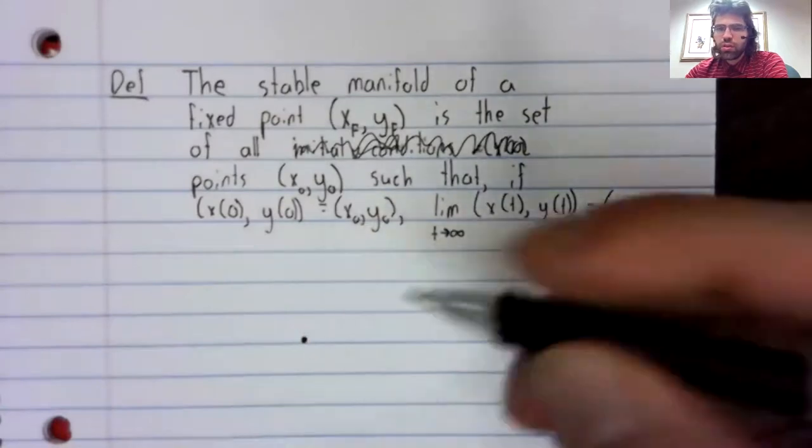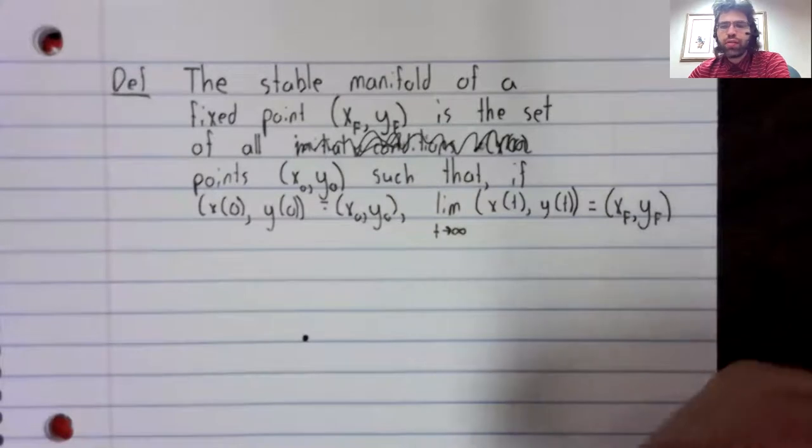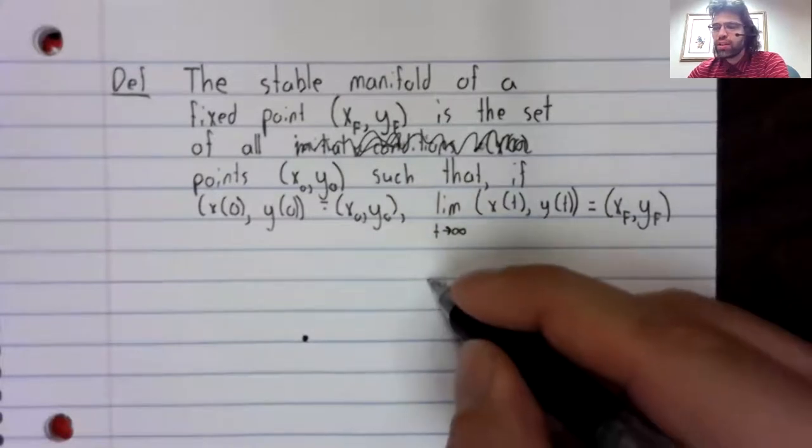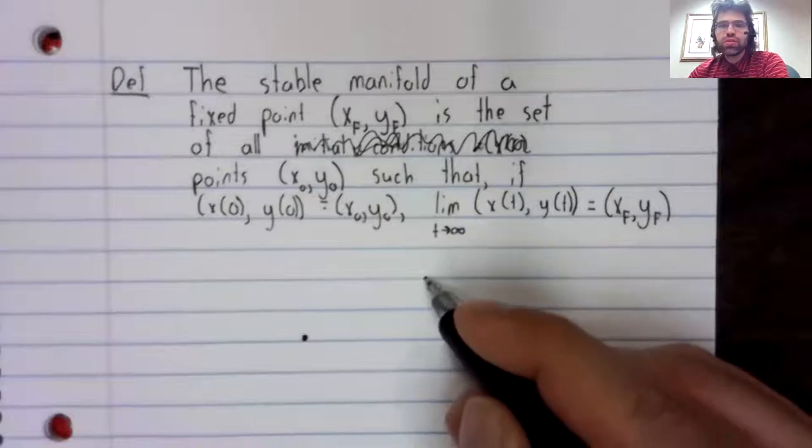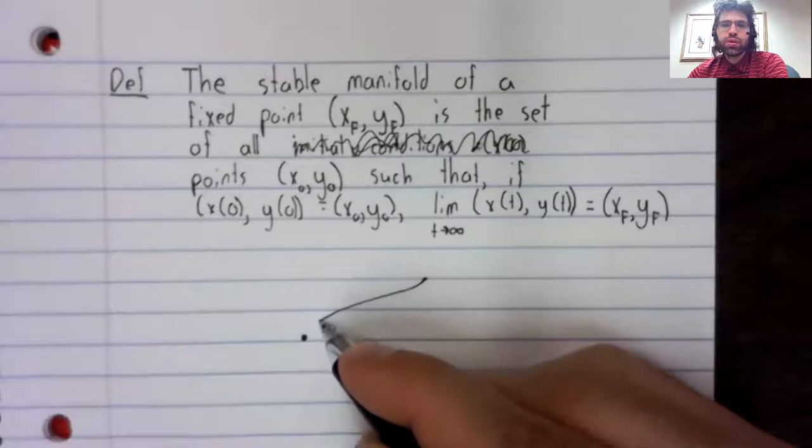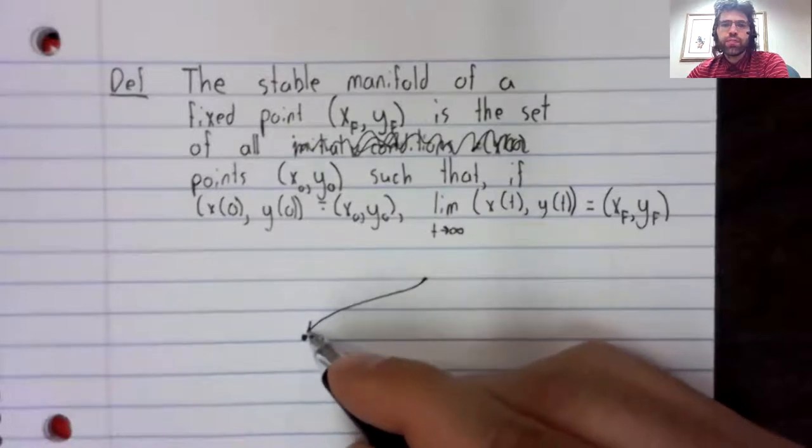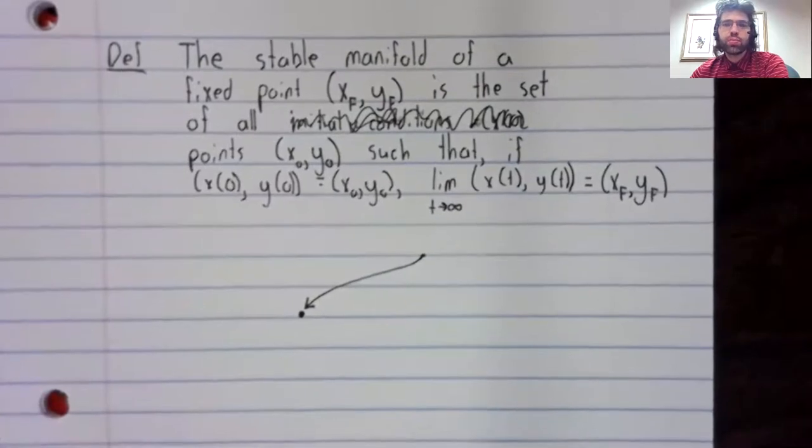So if we have a fixed point here, the stable manifold of the fixed point is all of the values such that if we start at that value, we converge to the fixed point.